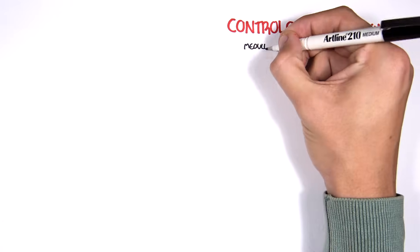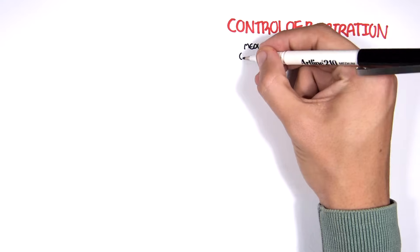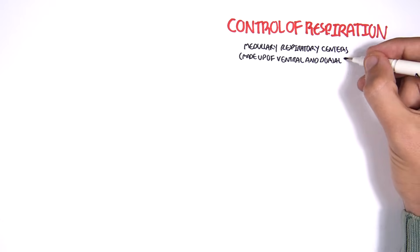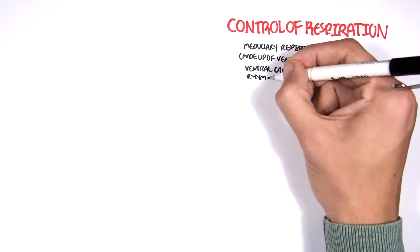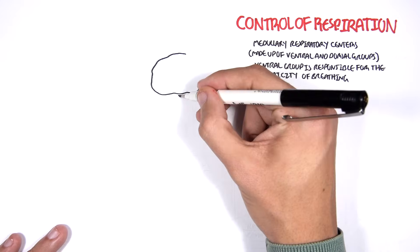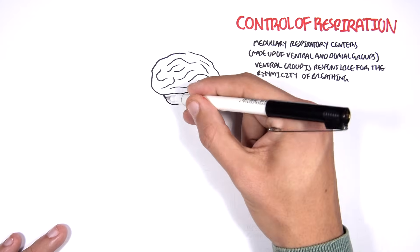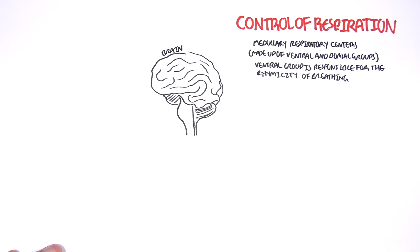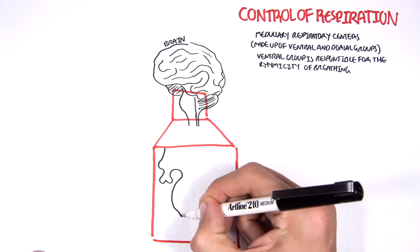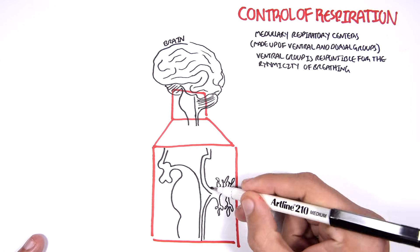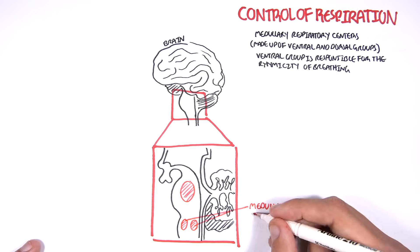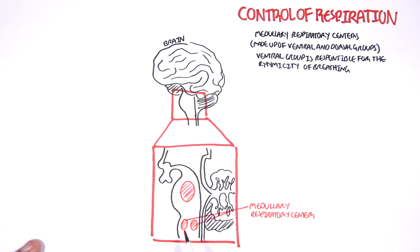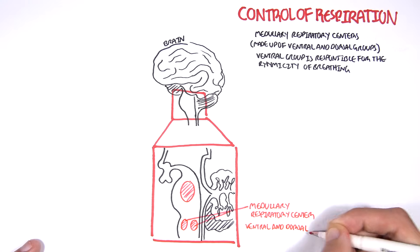The medullary respiratory centers control respiration. The medullary respiratory centers are made up of the ventral and dorsal groups. Here I'm drawing the brain, and if we zoom into the brainstem region we can locate the medulla oblongata. The two red circles here make up the medullary respiratory center, which is made up of the ventral and dorsal respiratory groups — the ventral being the front and the dorsal being the back.